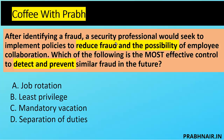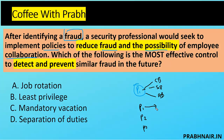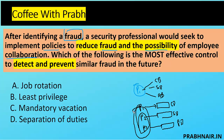The first question: after identifying fraud, a security professional would seek to implement policies to reduce fraud and the possibility of employee collusion. Normally, one person could create a bill, sign the bill, and approve the bill — committing fraud. To overcome that, we introduce separation of duty: person one creates the bill, person two signs it, and person three processes it. But later, all three could work together to commit fraud — this is called collusion.